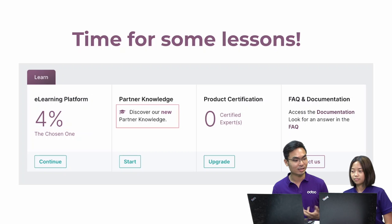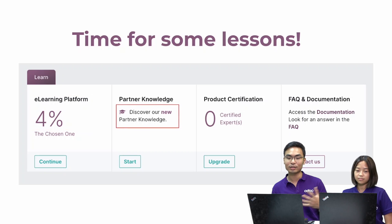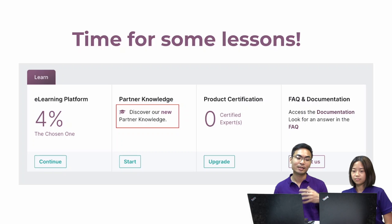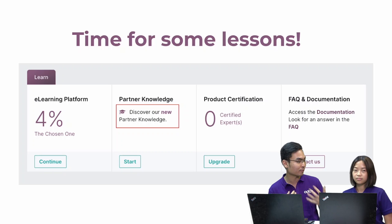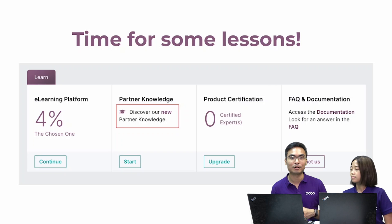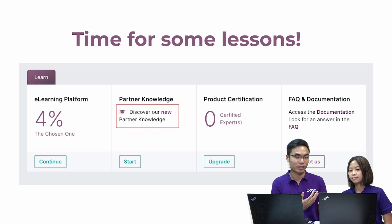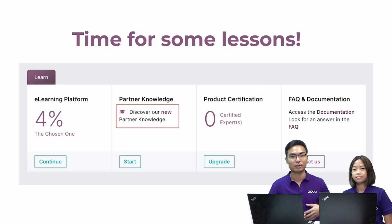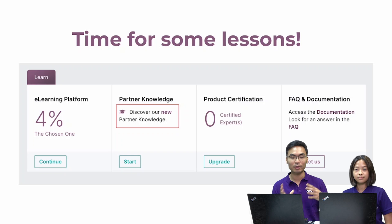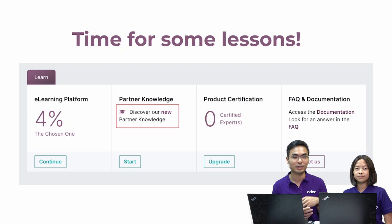The next part is the partner knowledge — the know-hows, the sales and technical knowledge that you'll be covering. Based on past partners' experience, you can refer to it and see what the tips are and what project management skills you can utilize. The third part is the product certification, which allows you to keep track of how many consultants or personnel in your company are certified by Odoo. You can proudly say to your customers, 'We have 10 certified consultants,' which makes you more credible. Lastly, there are frequently asked questions, with compiled written documents about Odoo modules and technical know-hows.